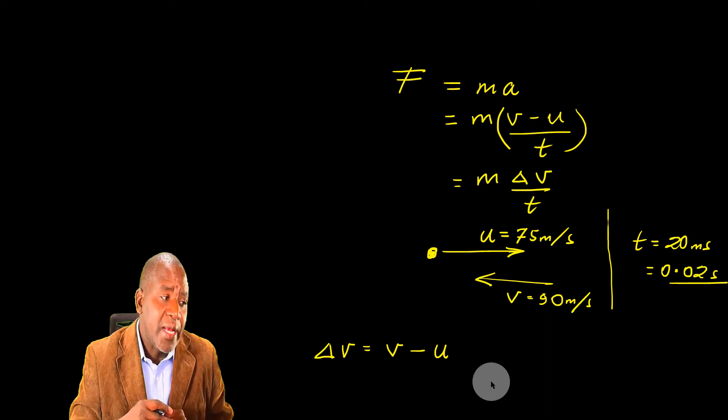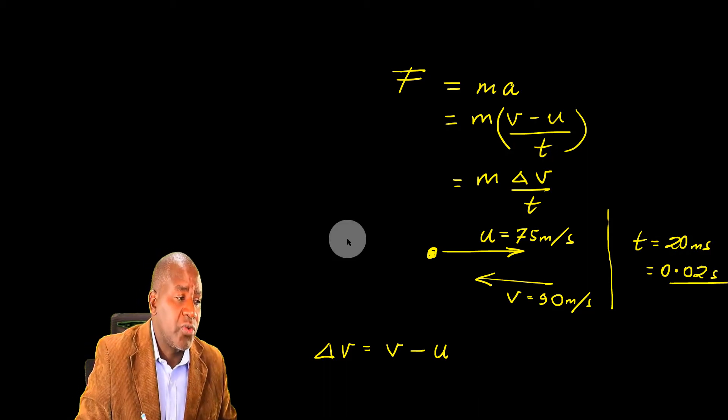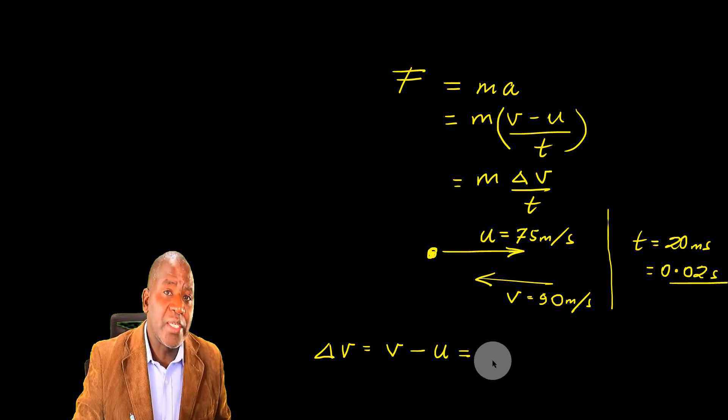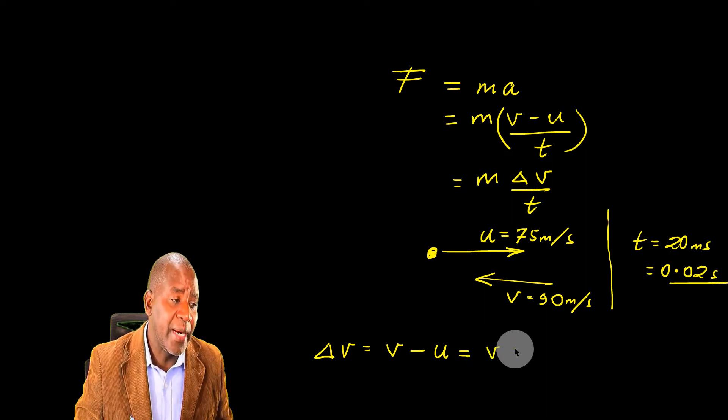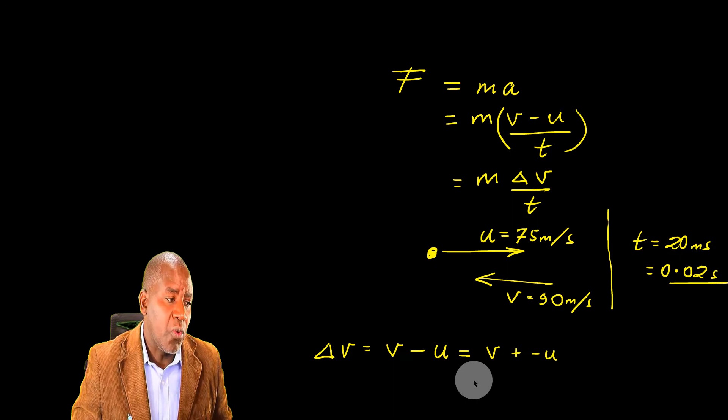Velocity is a vector. And when we are dealing with, we are either adding or subtracting vectors, we've got to put in the idea of direction. So in this case, when we are subtracting two vector quantities, we treat them like addition. Now, what does this mean, and why is it important?